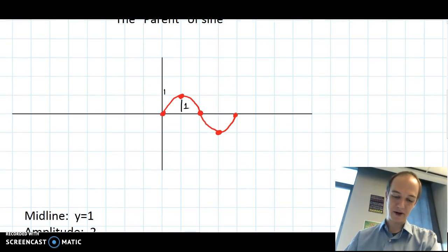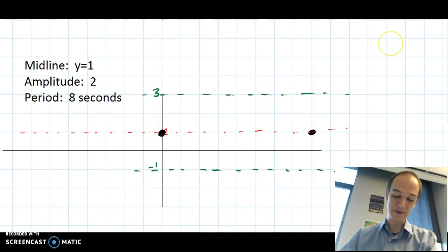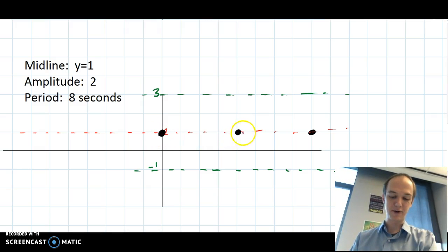Going back to the parent, it crosses the midline again halfway in between the start and the end. So on this function, halfway in between the start and the end is going to be at one, two, three, four units. Our parent function, halfway between the first cross of the midline and the second cross of the midline, attains its maximum. So it's going to attain the maximum at two units. And halfway between the last two midline crossings, it attains its minimum. So that's going to happen at six units.